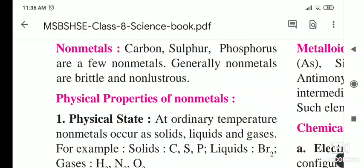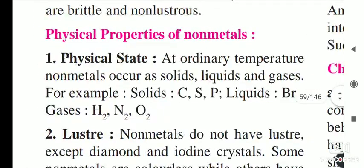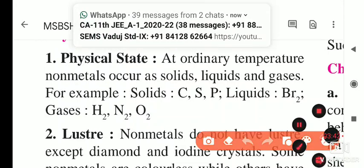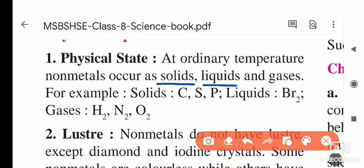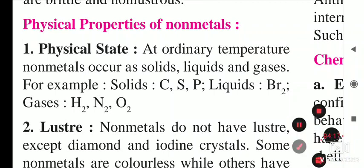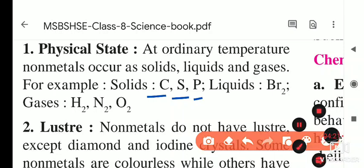Now the physical properties of non-metals. Just as metals are in solid state at normal temperature, non-metals also occur in solid state — for example carbon, sulfur, and phosphorus. Carbon as charcoal is formed when wood is burned and is in solid state. Sulfur powder and phosphorus powder are also in solid state at normal temperature.